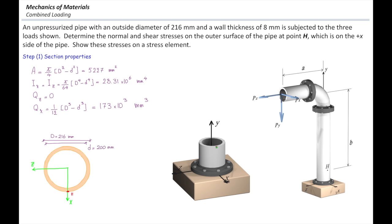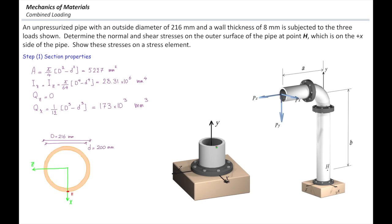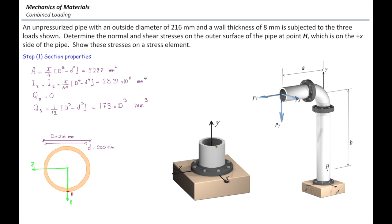Now it's your turn to solve a problem. Consider this pipe system subjected to three loads: Px, Py, and Pz. You would like to determine the stress acting at point H, located on the bottom part of that pipe next to the restraint. There are three steps: first, determine section properties — for the tubular section shown, properties are provided. Second, move all forces to the cut section passing through the point of interest. Finally, determine the effect of each force on point H and find all stresses caused by these forces at that point.